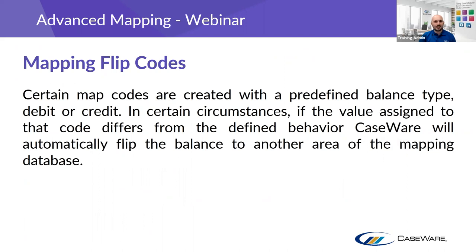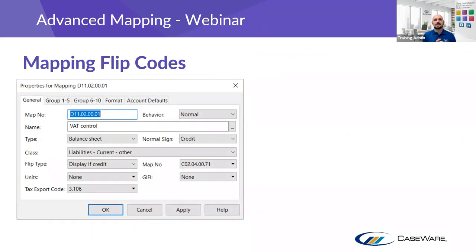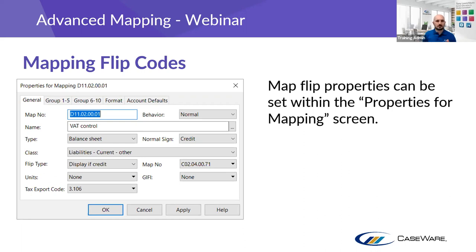Now let's look at mapping flip codes. The map number property screen shows you what the map number is — for example D1102 0001 — and then underneath it talks about flip properties. So D11 is your VAT control account. It expects a credit balance as it's a liability. If the balance assigned to D11 isn't a credit, it sends that balance over to C0204, which is our current assets — VAT repayable.